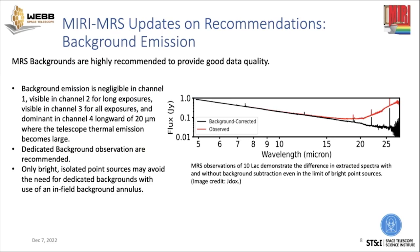For background emission, we also recommend taking backgrounds for most science applications. At the shorter wavelengths of channels 1 and 2, the background emission is actually quite low. You start to see it in channel 3, and then it dominates in channel 4 longward of 20 microns. The only case where you could get away without a dedicated background is if you have a very bright, isolated point source where you'd trust an in-field background annulus. But often when taking infrared spectra for the first time, you might find unexpected things in your field, so we recommend taking background observations unless you're sure you'll have an isolated field.